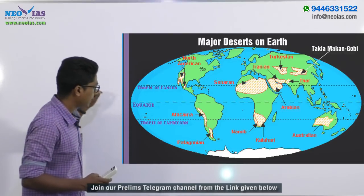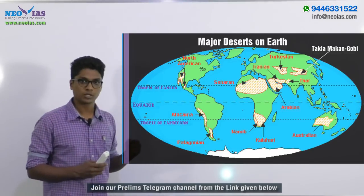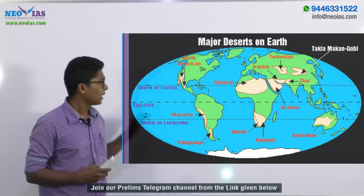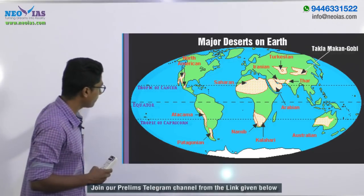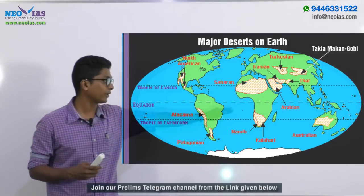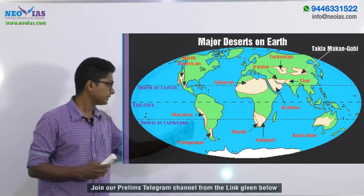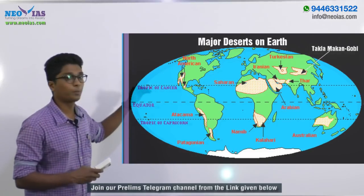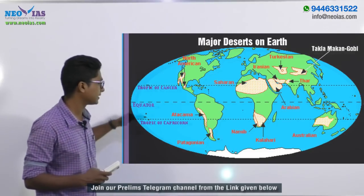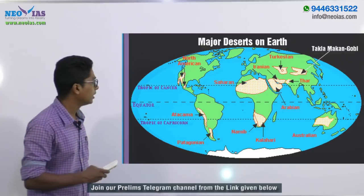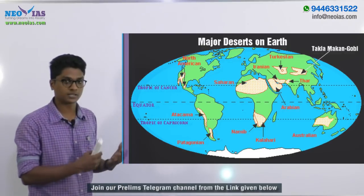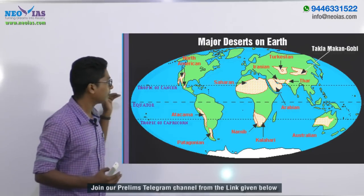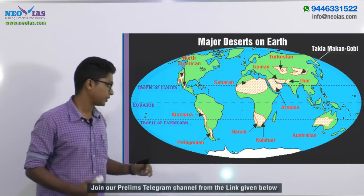These deserts are not along the equator. We know that along the equator we receive more temperature, so going by that logic deserts should be forming over equatorial regions — but that's not the case. These deserts are towards the western margin and along the subtropical high pressure belt, near the Tropic of Cancer as well as Capricorn.